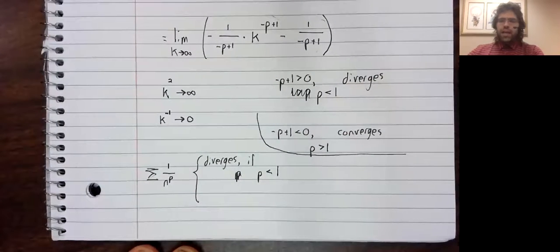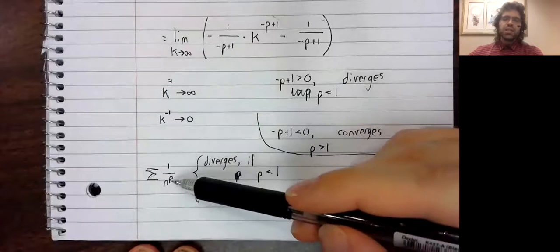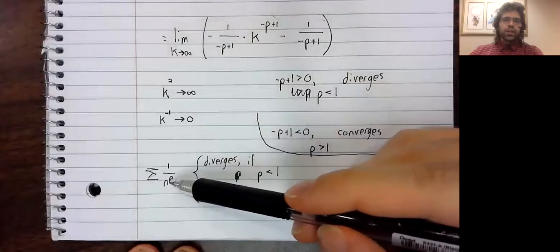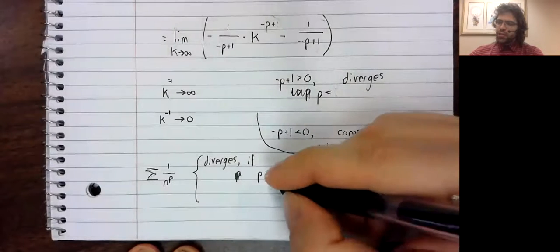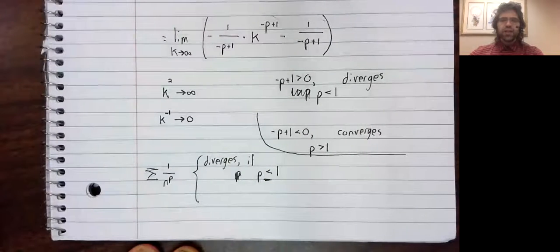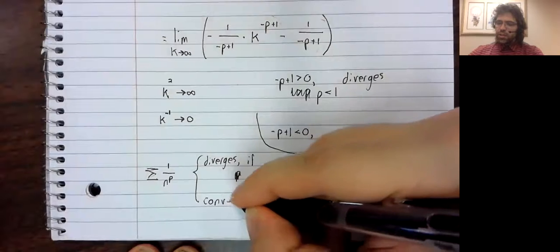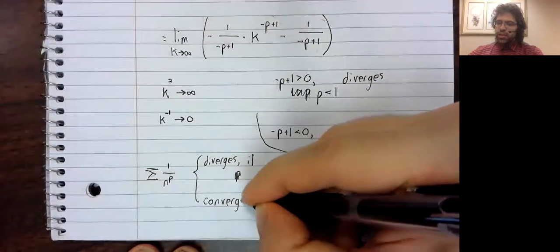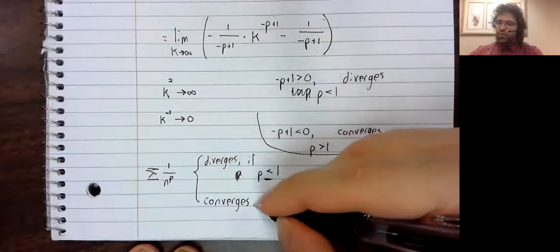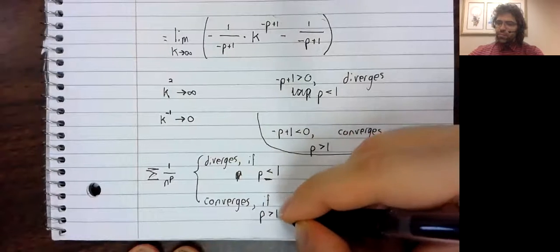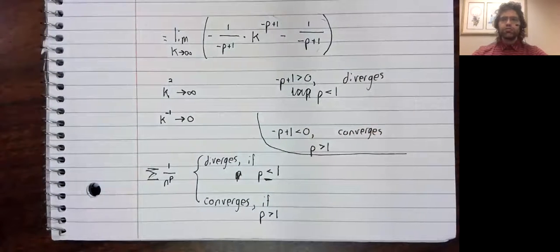And now let's get rid of the restriction that P not be equal to one. If P equals one, this is harmonic and it diverges. And it converges if P is greater than one.